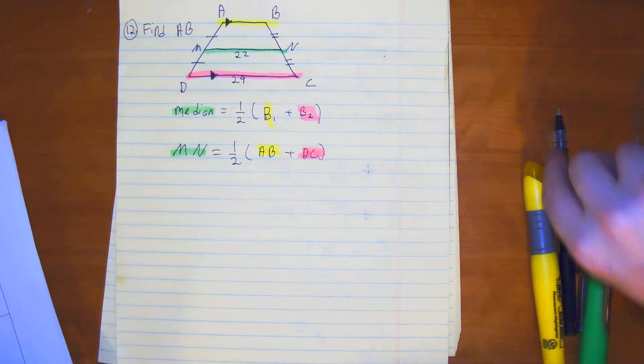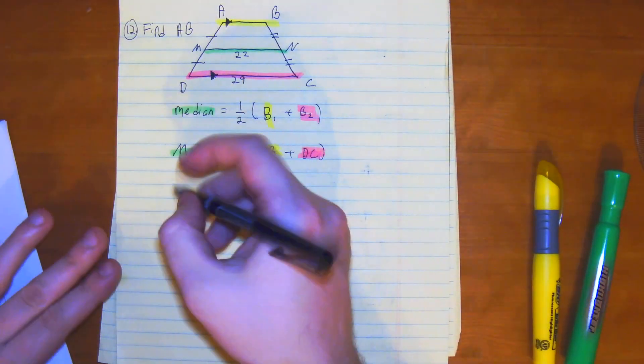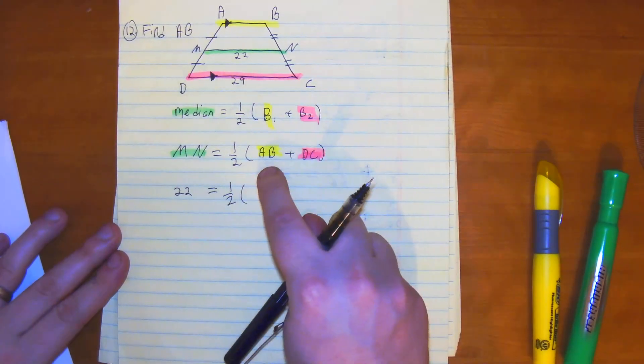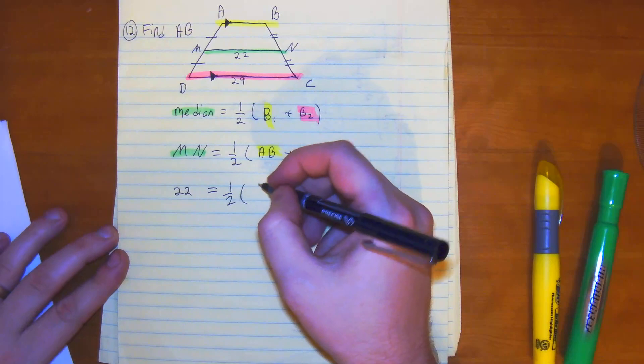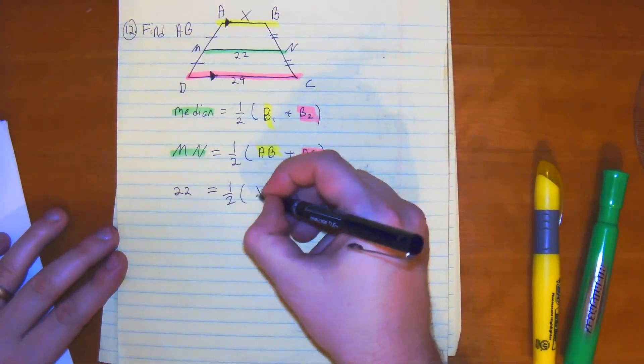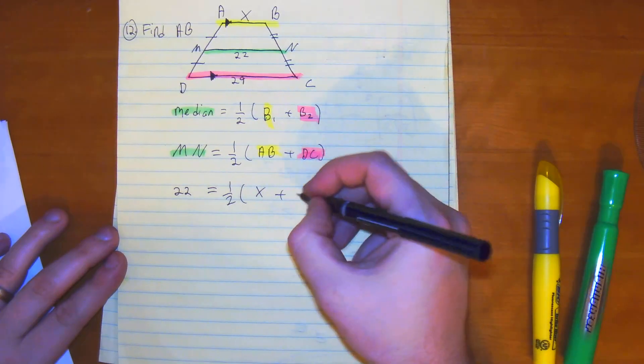So all we have to do now is just plug in the information and go from there. We have 22 is equal to one-half of AB. We don't know what AB is. Just to simplify it, we can call it X. X plus 29.